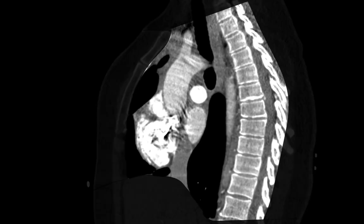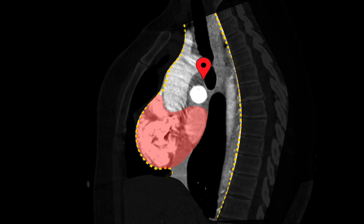The mediastinum extends from the thoracic inlet to the diaphragm, and it's often subdivided into three compartments: the anterior mediastinum, the middle mediastinum, and the posterior mediastinum. As chest radiologists, we typically use the anterior surface of the great vessels and the heart as the boundary between the anterior and middle mediastinum, and the anterior surface of the thoracic spine as the boundary between the middle and posterior mediastinum. The middle mediastinum is the topic of this talk.